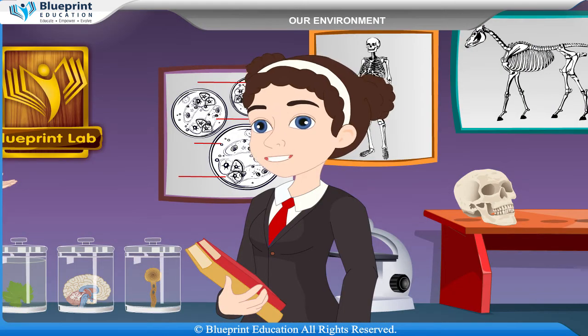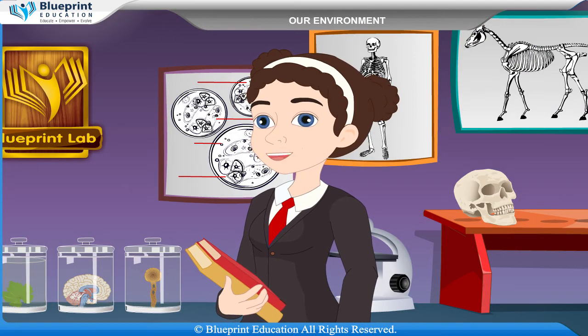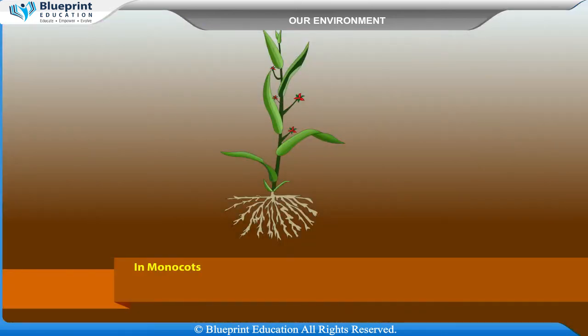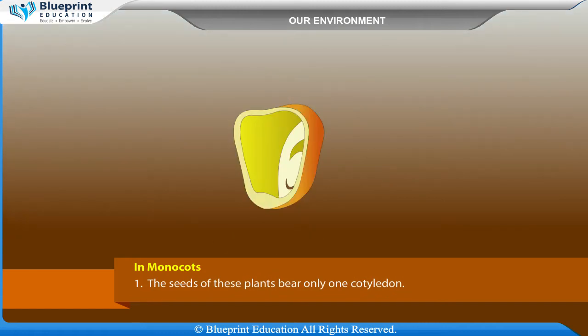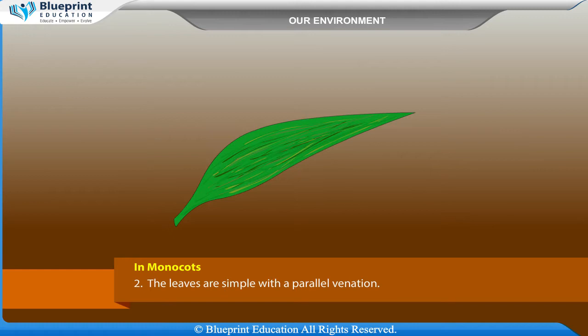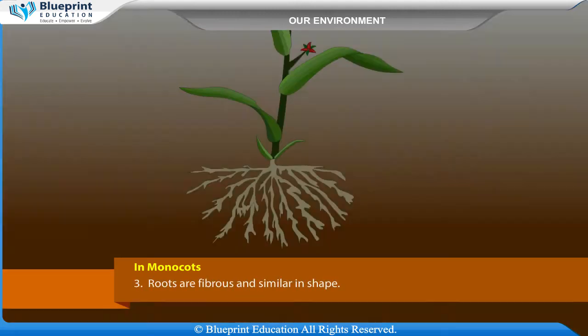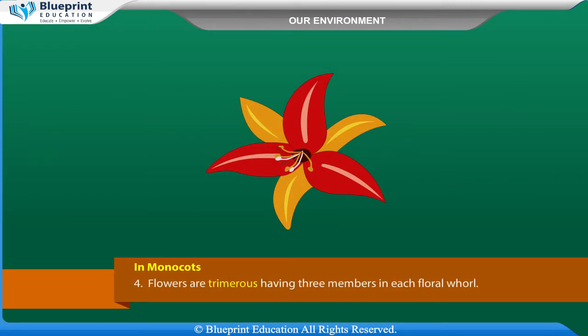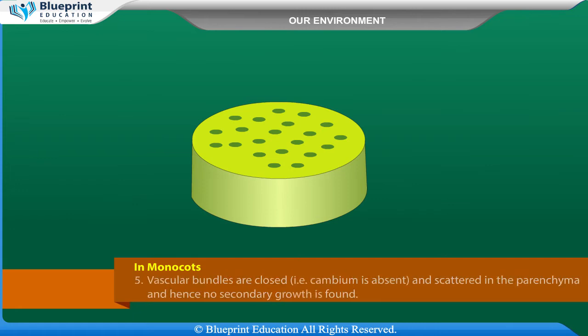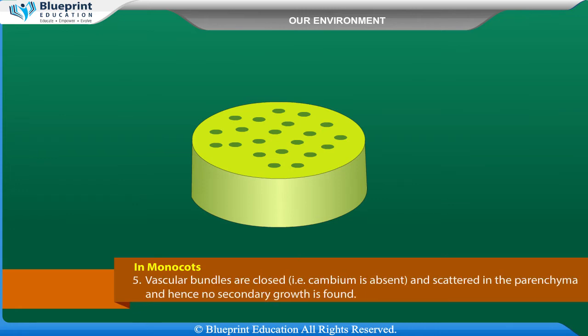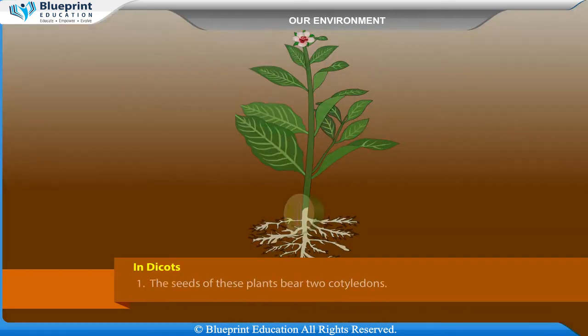How can we identify root, stem, leaf, and flower of monocot and dicot plants? In monocots, the seeds bear only one cotyledon. The leaves are simple with parallel venation. Roots are fibrous and similar in shape. Flowers are trimerous, having three members in each floral whorl. Vascular bundles are closed — that is, cambium is absent — and scattered in the parenchyma, and hence no secondary growth is found.